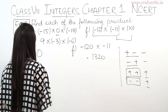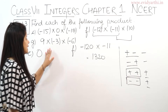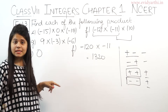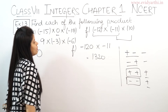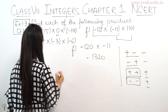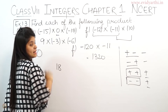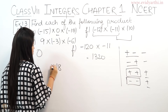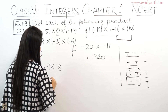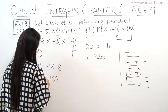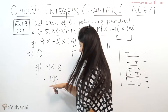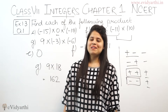Part G is 9 × minus 3 × minus 6. Let's first do the bracket pair: 6 × 3 = 18, and minus × minus = plus, so that's positive 18. Now 9 × 18 = 162. Both are positive, so the sign is obviously plus. Answer for Part G is 162.